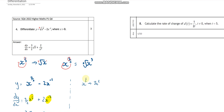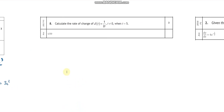Let's try another one. 'Rate of change' is another way of saying the differential. If you're not sure whether a question involves differentiation, just differentiate — you'll get a mark for it. Words like acceleration, gradient, slope, and optimization are all associated with differentiation. We've got a function in terms of t, and we're told t cannot equal zero because we can't divide by zero. We want the rate of change when t equals five.